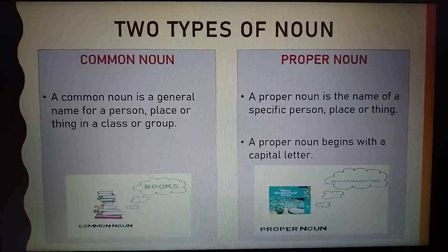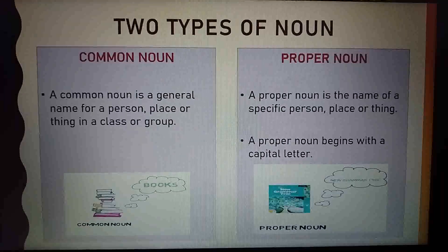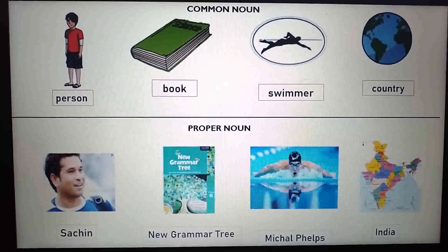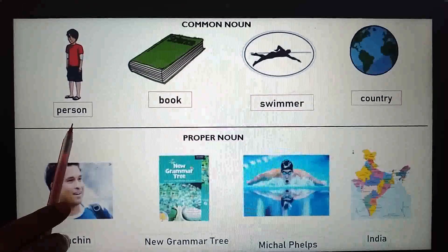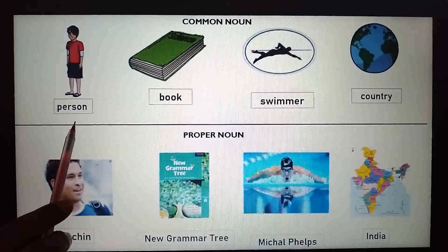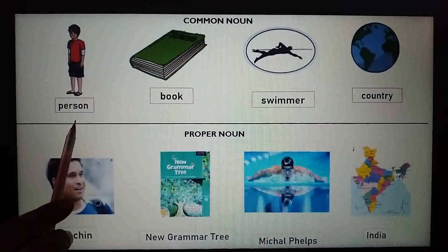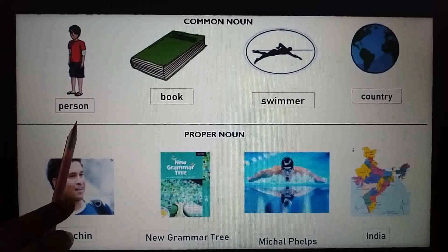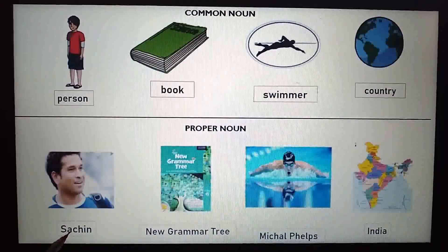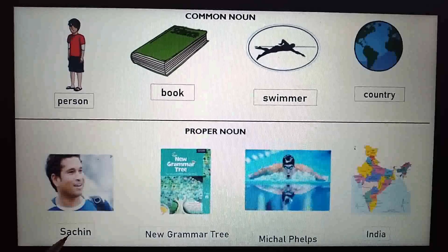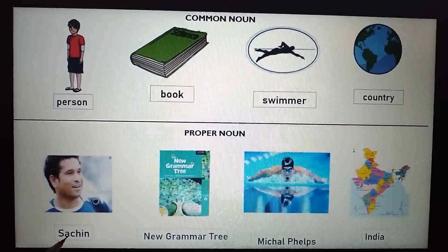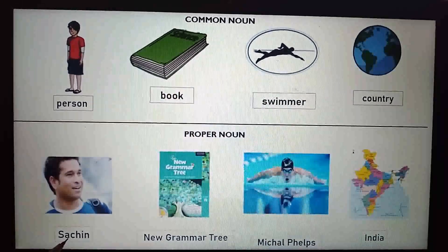Let us see some more examples to make it clear. This is the picture of a person. Person is a common noun. When the person is given a specific name, it becomes a proper noun. Now, Sachin is a person. Sachin is a special name given to a person. So, Sachin is a proper noun.